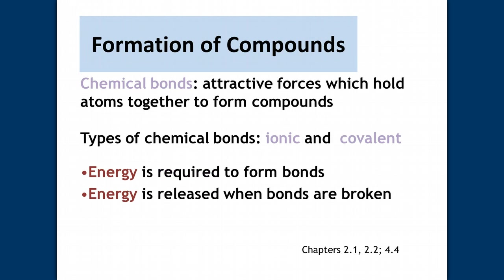How do compounds form? By chemical bonds — the attractive force which holds atoms together to form bonds. There are two different types: ionic and covalent bonds. To make these bonds requires energy to form them. When these bonds are broken — when you're breaking down one of these compounds — energy is released. So to form a compound you need energy, and to break the compound it releases energy.